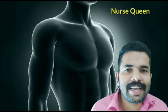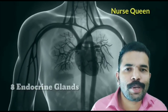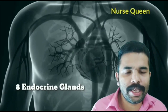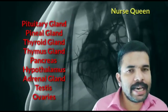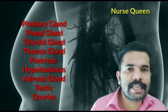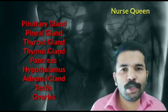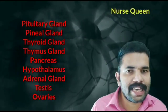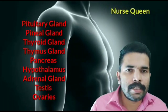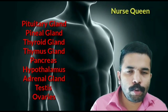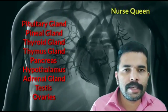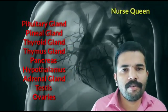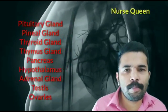There are eight major endocrine glands in the human body. The pituitary gland is the master gland of our body. Others include the pineal gland, which secretes melatonin — the sleep-inducing hormone — as well as the thyroid gland, thymus gland, pancreas, hypothalamus, adrenal gland, testes in males, and ovaries in females.